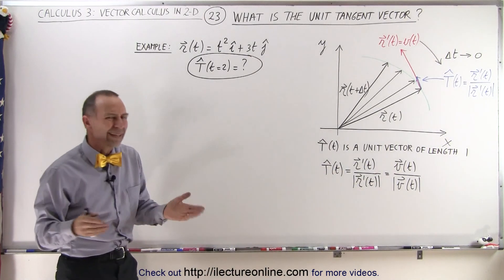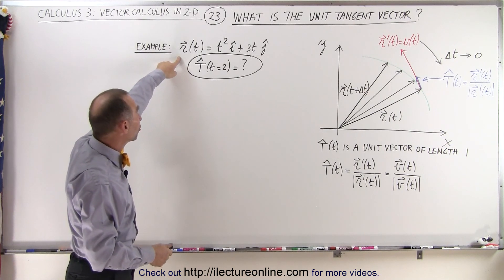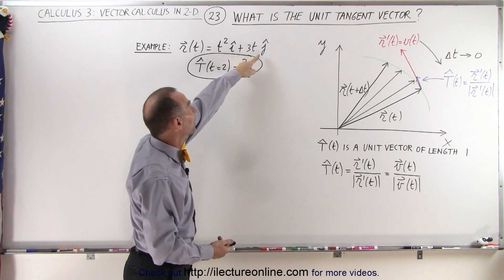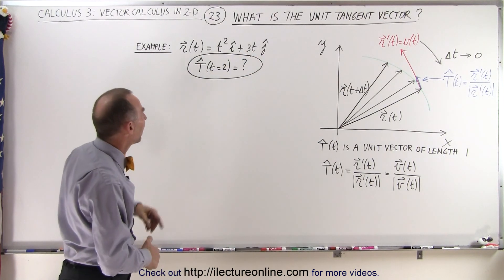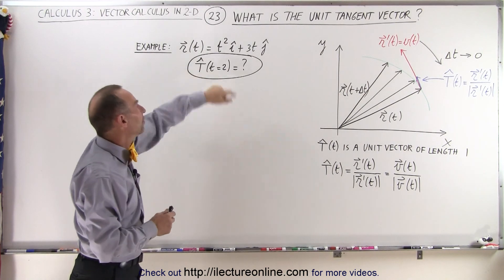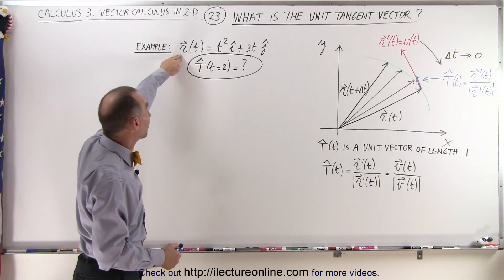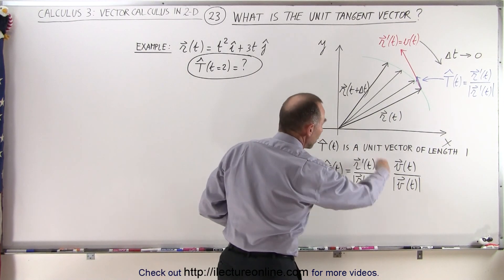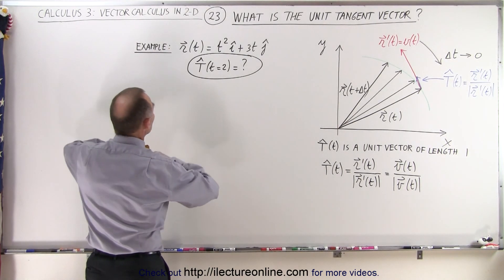Let's do an example to see how that actually works. We go back to our position vector: t² in the i direction plus 3t in the j direction. We're going to evaluate the unit tangent vector when t is equal to 2. That means we first need to find the derivative of that vector, since we define the unit tangent vector by that equation.